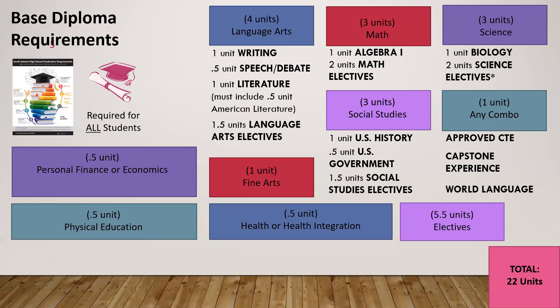Students also need one unit that can be a combination of approved CTE, a capstone experience, or a world language such as Spanish or French. They need a half credit for personal finance or economics, a half credit for physical education, one credit for fine arts, a half credit for health or health integration, and five and a half other elective units — for a total of 22 units. Those are the basic diploma requirements required for all students.